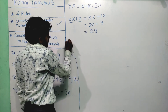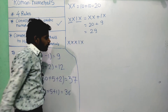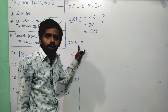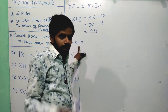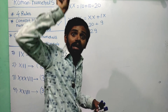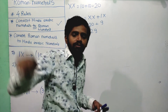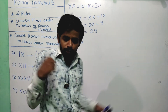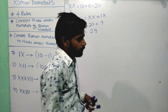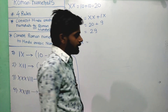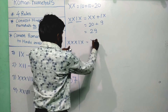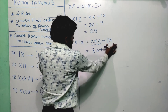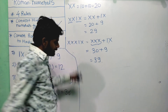For XXXIX: XXX equals 30. Then IX — the I is between X and X, so subtract: IX equals 9. Bifurgate as XXX plus IX equals 30 plus 9 equals 39.